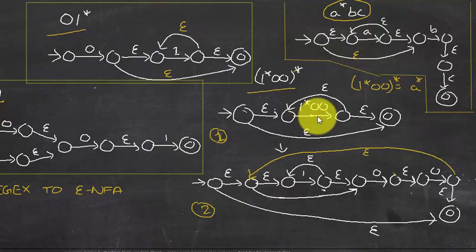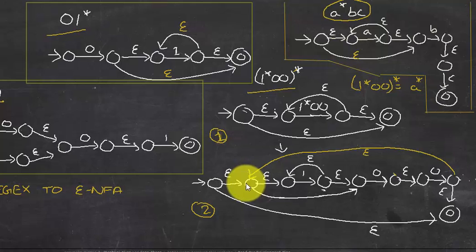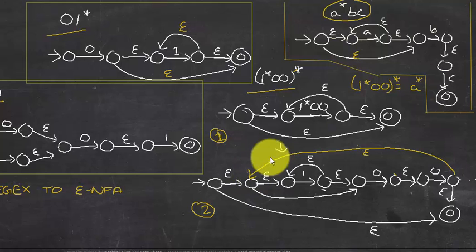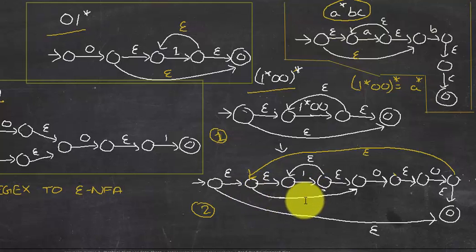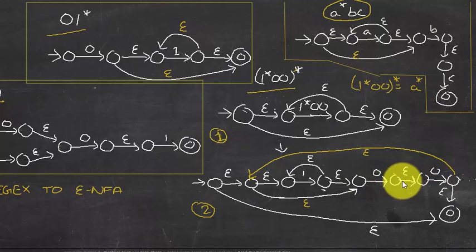In the second step, further break down 1* inside: epsilon at beginning, epsilon at end, epsilon going back, and epsilon going directly forward. Then 00 is simple concatenation: 0, epsilon, 0. It's better to do this in three steps — break down the outer closure, then 1*, then the concatenation — to avoid mistakes.